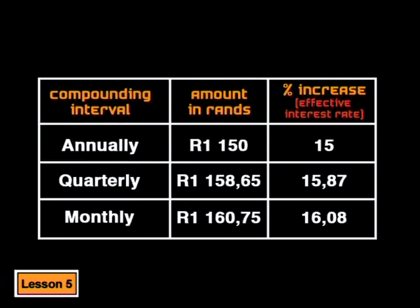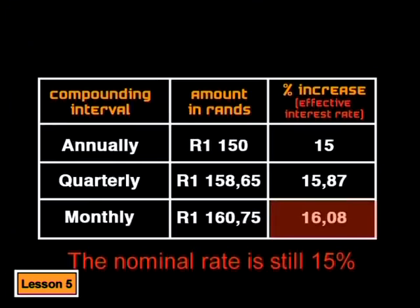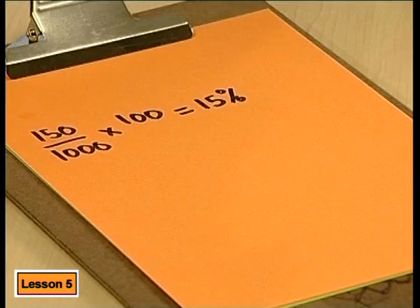This is why banks use two kinds of interest: nominal interest rate and effective interest rate. The percentage increase over the course of one year is known as the effective rate — the rate you are actually getting. So when the amount is compounded monthly, the effective rate is 16.08%, but the nominal rate is still 15%. The effective interest rate tells you the actual percentage increase you'll get on your money. Unless the compounding interval is one year, the effective rate will be higher than the nominal rate.